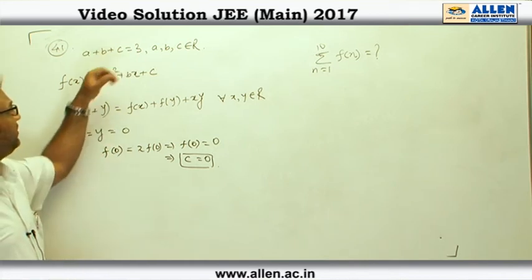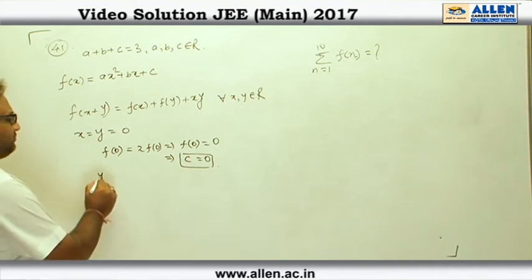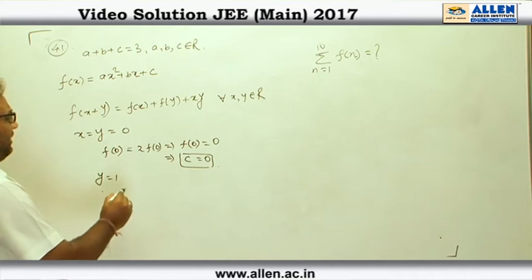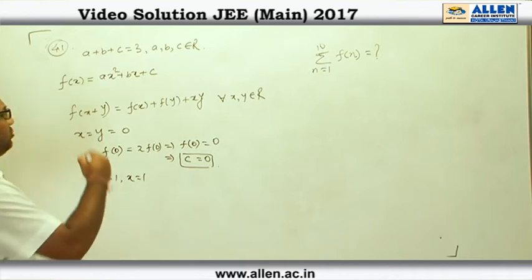Moreover, a plus b plus c is given to be 3. Now, from here if I put y equal to 1, then y equal to 1 and x equal to 1, then I can get f(2) as f(1) is already known to me.